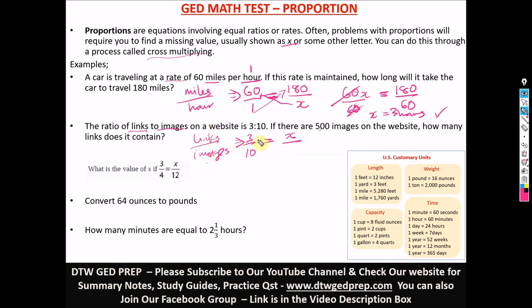So this is the first ratio which should be equal to 500 images on the website. How many links does it contain? So we're looking for links, right? So links will be up while images will go down. Since it's links to images. Are you getting it? So the first thing is getting your ratio right. Links to images so that you can put in your values well. So images goes to the denominator. So 500 comes here. So from here, we can now solve X by doing what? We cross multiply. So 500 multiplies 3, 10 multiplies X.